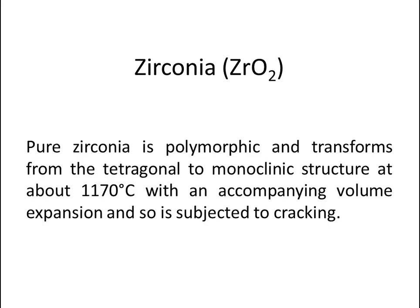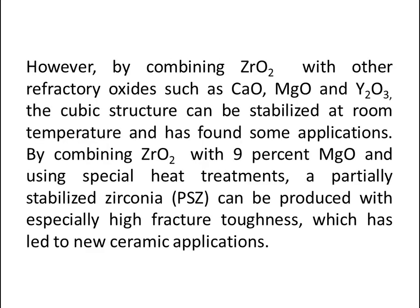Now let's talk about zirconia. Pure zirconia is polymorphic and transforms from the tetragonal to monoclinic structure at about 1170 degree Celsius with an accompanying volume expansion and so is subjected to cracking. However, by combining zirconium oxide with other refractory oxides such as calcium oxide, magnesium oxide, and others, the cubic structure can be stabilized at room temperature. By combining zirconium oxide with 9% magnesium oxide and using special heat treatments, a partially stabilized zirconia can be produced with specially high fracture toughness, which has led to new ceramic applications.